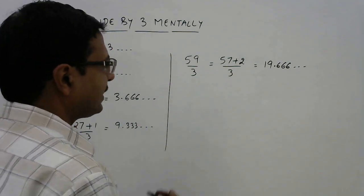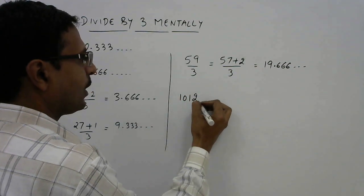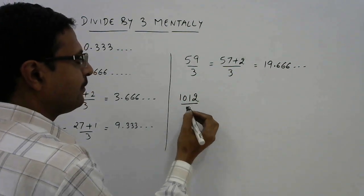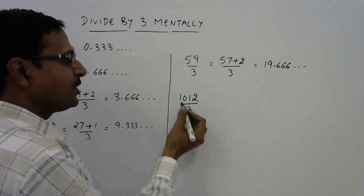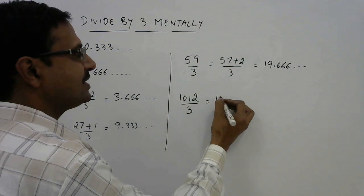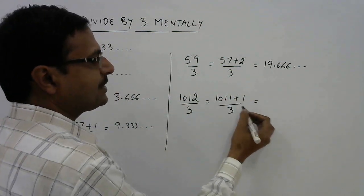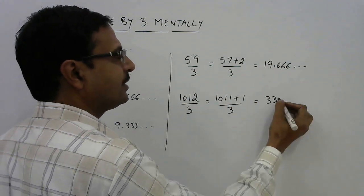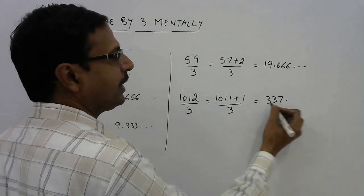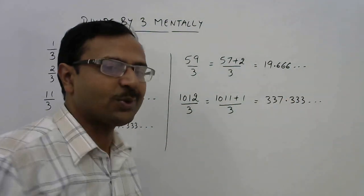I will take one more example then we conclude. Suppose 1012 divided by 3. See 2 plus 1, 3 plus 1, 4. 4 is not divisible by 3, so reduce this by 1. You get 1011 plus 1 by 3. 3 threes are 9, 11, 3 threes are 9, 21, 3 sevens are 21. 1 by 3 means 0.333 and so on. And here is your result.